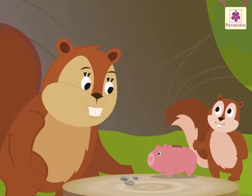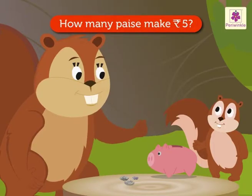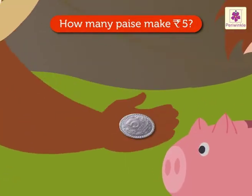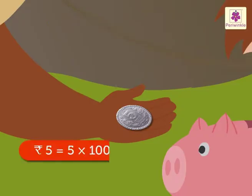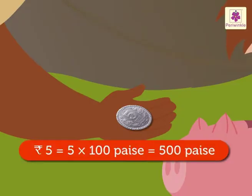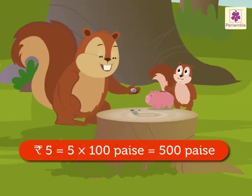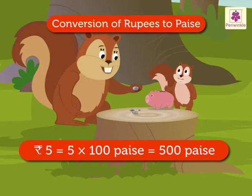Now, tell me, how many paise make five rupees? Five rupees is equal to five into hundred, which is equal to five hundred paise. Correct. This is called conversion of rupees to paise.